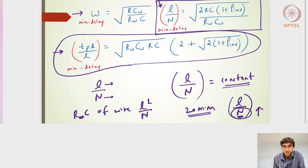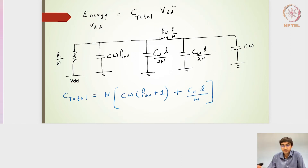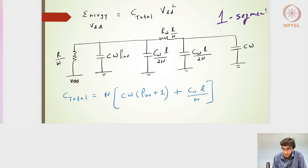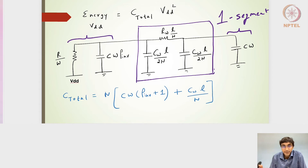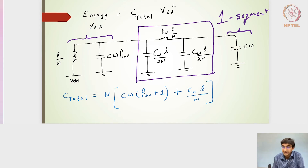The expression is the square root of Rw·Cw·R·C multiplied by 2, plus the square root of 2·(1 + ρ_in). This is the circuit representation for one such segment, where this portion is for repeater one, this is the input capacitance of repeater two, and the model in between is the pi model of one segment of the wire. What should be the energy delivered by VDD across all the capacitances in this segment?